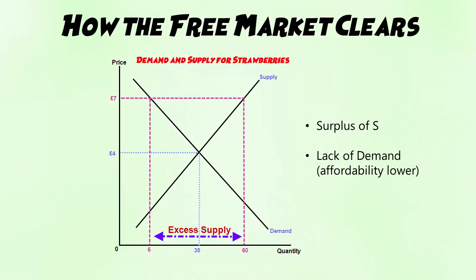Similar analysis applies when we look at excess supply. When there's excess supply at a given price — here £7 — there is a greater amount of supply at that price compared to demand. So there's a surplus in supply.